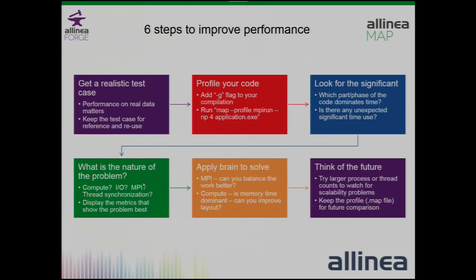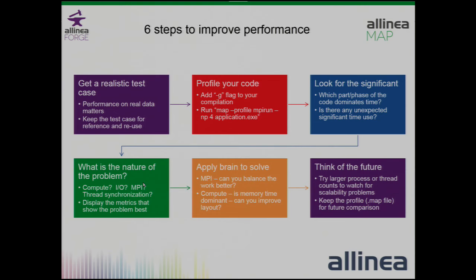Once you've got the GUI displaying the performance, look for the significant. Don't spend your time trying to optimize something that's less than 2-3% of the performance, because you're never going to get more than 2-3% improvement. Focus on what matters. If someone says we need to rewrite this thing because it's not scalable - prove it. Go and run it and say, actually it's 1% of my performance, I'll put my time elsewhere.